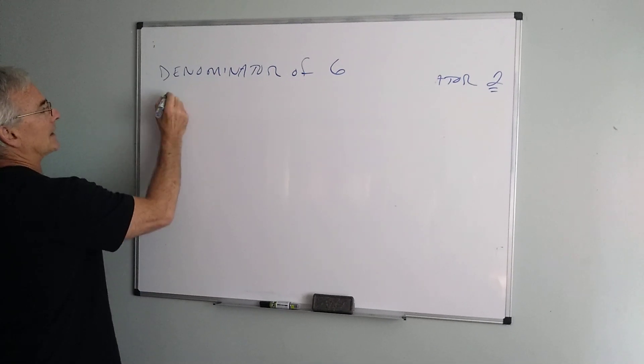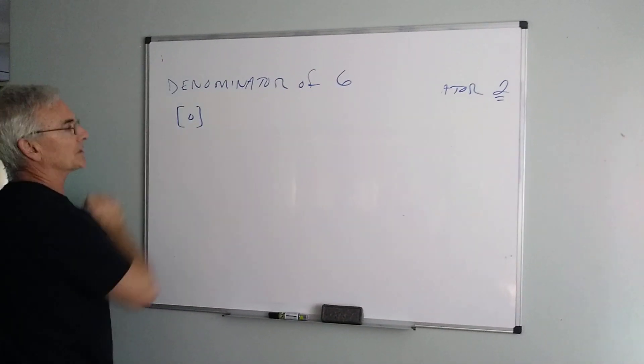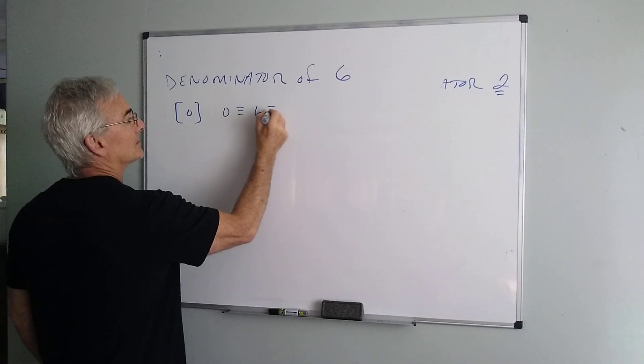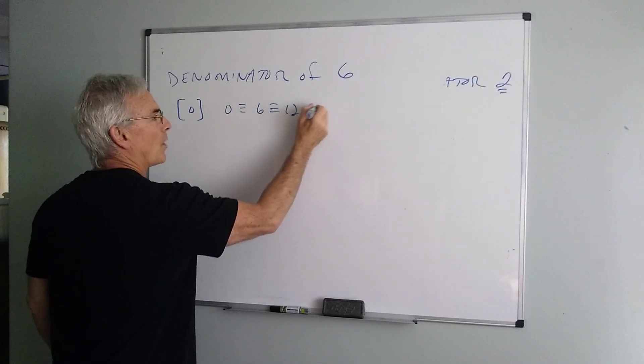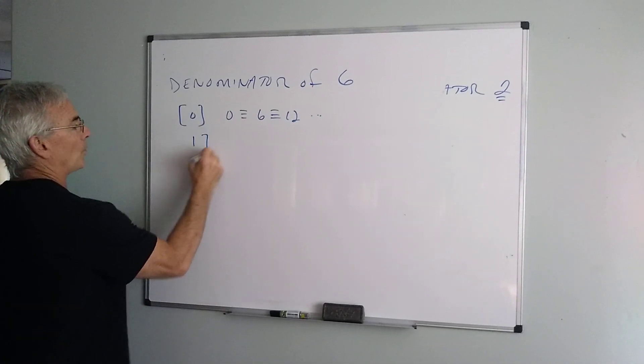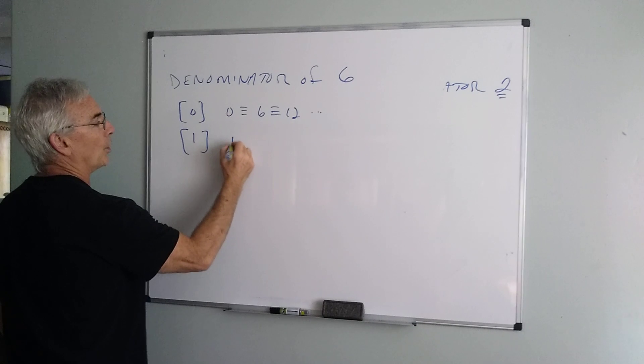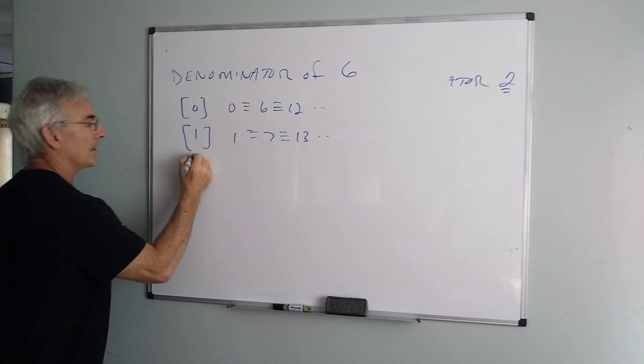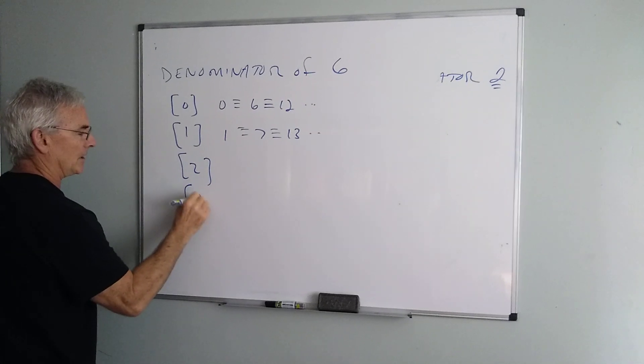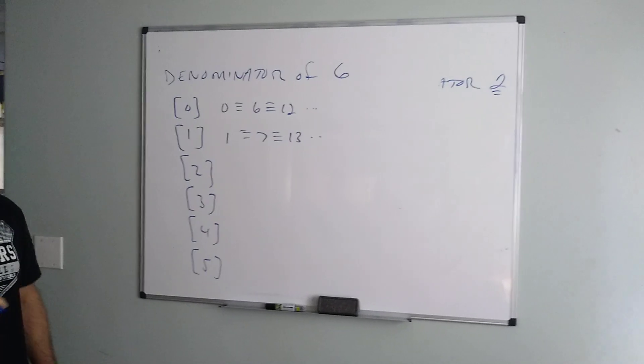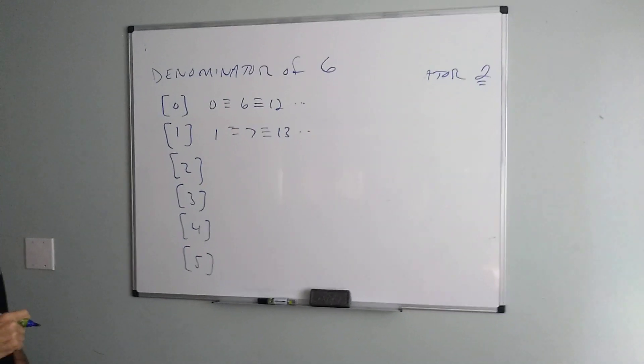And so we'll write it like this. The equivalence class for 0 will include 0, 6, 12 and so on. Basically I'm counting by 6's. The equivalence class for 1 is 1, 7, 13 and so on. So if we go all the way down the line, clearly we're going to have 6 different classes because of 6 different forms of remainders.